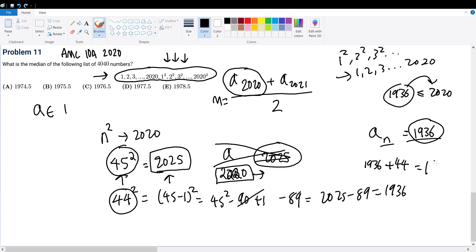So it will be given us 1980. So a's of 1980, meaning the 1980th term within this giant sequence will give us 1936.